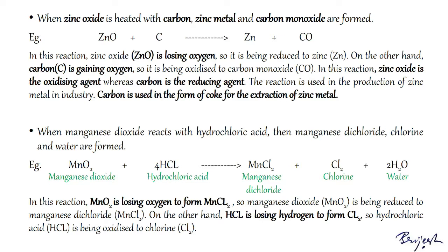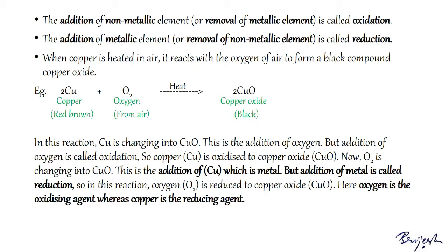So far we have studied oxidation and reduction in terms of oxygen and hydrogen. There is another concept in terms of metals and non-metals: the addition of a non-metallic element or removal of a metallic element is called oxidation, whereas the addition of a metallic element or removal of a non-metallic element is called reduction. Note that copper oxide (CuO) is also known as copper(II) oxide because the valency of copper in it is 2.